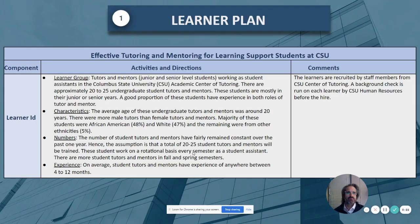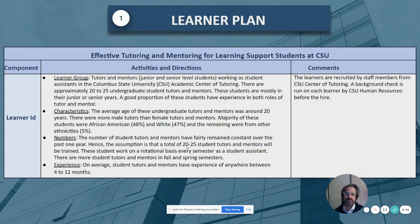Starting off with the learner plan, we will focus on the learner group, the characteristics of that group, the numbers we're planning on training, and the experience we're expecting from that learner group. We're expecting them to be around junior to senior level students serving as tutors and mentors, approximately 20 years of age, with a balanced mix of ethnicities. We're looking to train 20 to 25 individuals with about 4 to 12 months of experience.